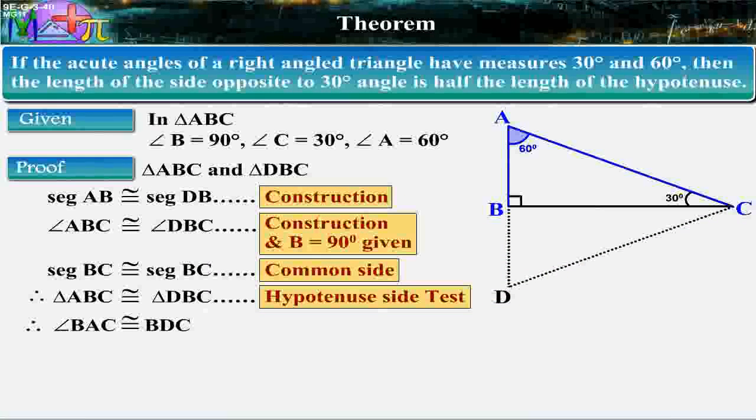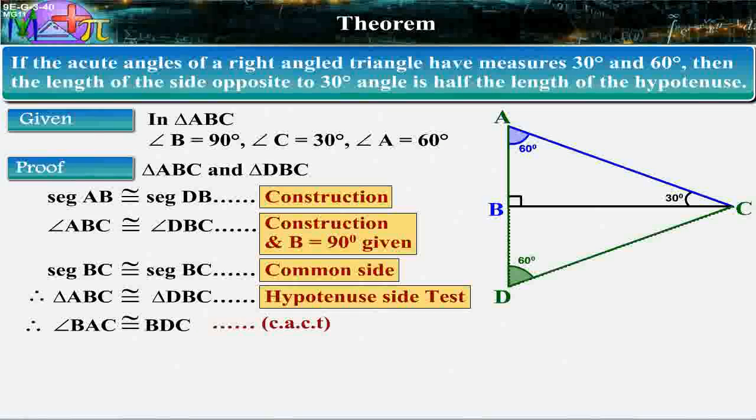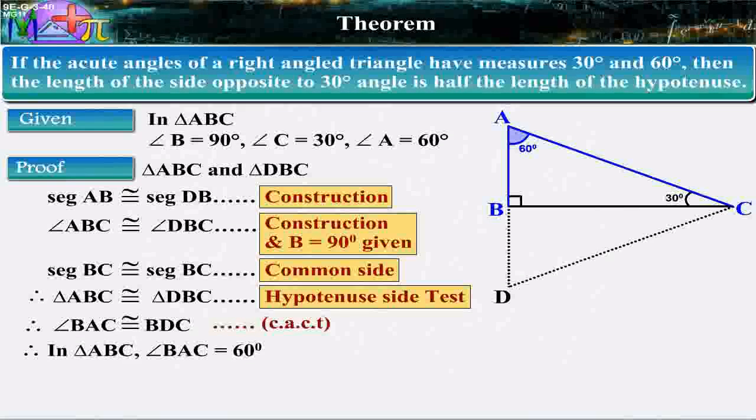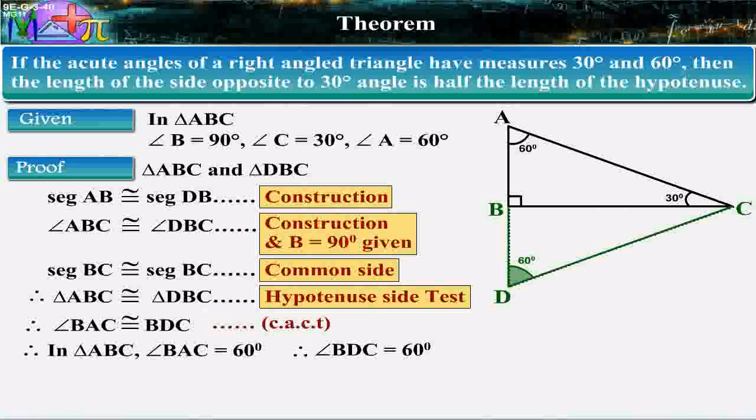Therefore, angle BAC is congruent to angle BDC, corresponding angles of congruent triangles. In triangle ABC, angle BAC is equal to 60 degrees. Therefore, angle BDC is equal to 60 degrees.